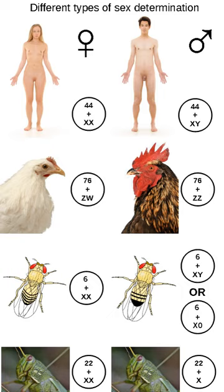In XY mice, lack of the gene DAX1 on the X chromosome results in sterility, but in humans it causes adrenal hypoplasia congenita. However, when an extra DAX1 gene is placed on the X chromosome, the result is a female, despite the existence of SRY. Even when there are normal sex chromosomes in XX females, duplication or expression of SOX9 causes testes to develop.